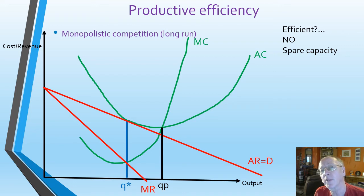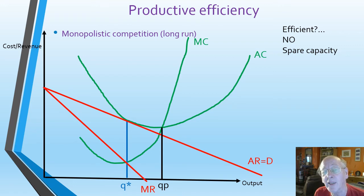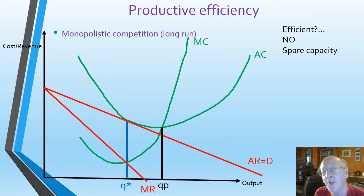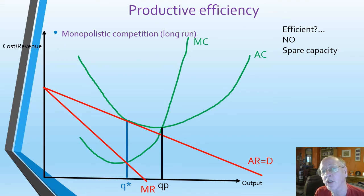If you want some decent examples of that, look at monopolistically competitive markets like the high street coffee market — cafes. Cafes are typically empty; they have spare capacity. And so this diagram might help to explain that.